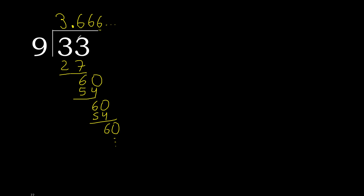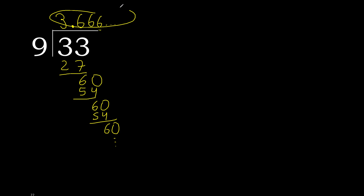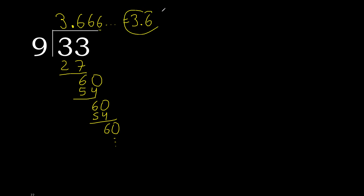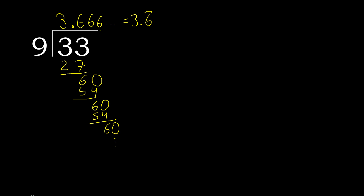Finish it. 33 divided by 9 is 3, or after the point, 6 repeat. Therefore 6 repeat, like this. Equal.